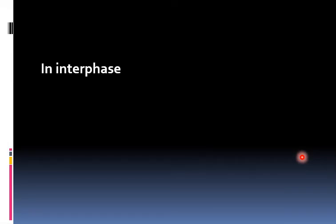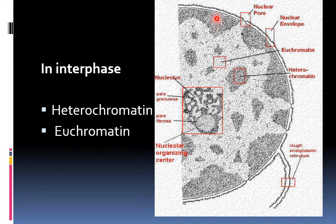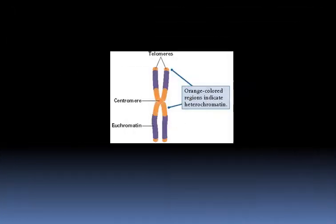In interphase, the nucleus is composed of darkly stained chromatin called heterochromatin and lightly stained chromatin called euchromatin. The heterochromatin is genetically inactive, and the euchromatin is genetically active in protein synthesis. This image shows the distribution: the orange-colored region indicates heterochromatin found near the center and at the ends of the chromosome, whereas the purple color indicates euchromatin.